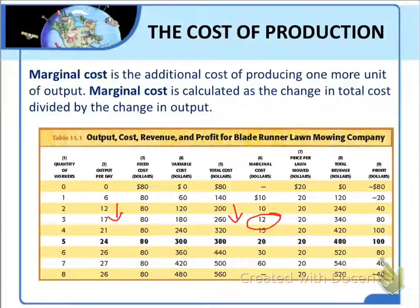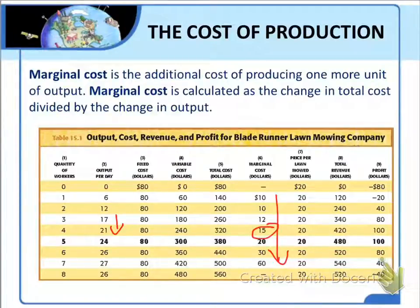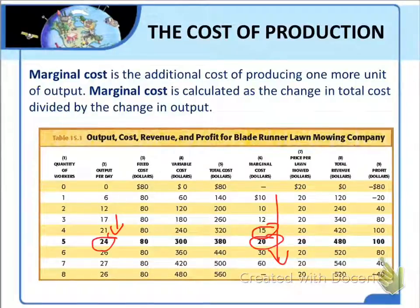Notice that as you look down column 6, the marginal cost is increasing as output increases. As we just calculated, the marginal cost is $12 to increase output to 17 lawns. When Blade Runner increases output from 17 to 21 lawns, we see the marginal cost rises to $15. And a further increase to 24 lawns, the marginal cost would increase to $20. So it becomes increasingly costly to mow additional lawns as the total number of lawns mowed increases.